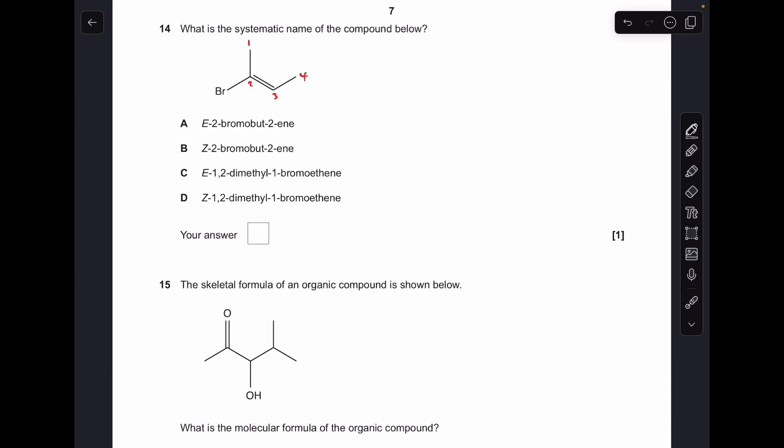Question 14, you can see I've already numbered the carbon chain, so it's a chain of 4, so we can get rid of options C and D. So the next thing we've got to do is establish whether we've got the E form or the Z form. We establish priority groups on each carbon of the double bond, so we're looking at atomic numbers. So if we look at carbon 2, we've got bromine versus carbon. Bromine's got a higher atomic number, so that's got priority. Do the same for carbon 3. We've got hydrogen versus carbon. Obviously carbon wins that one. So the priority groups are on opposite sides of the double bond. That's the E form, so that's option A. And the E comes from the German word for opposite, Entgegen.